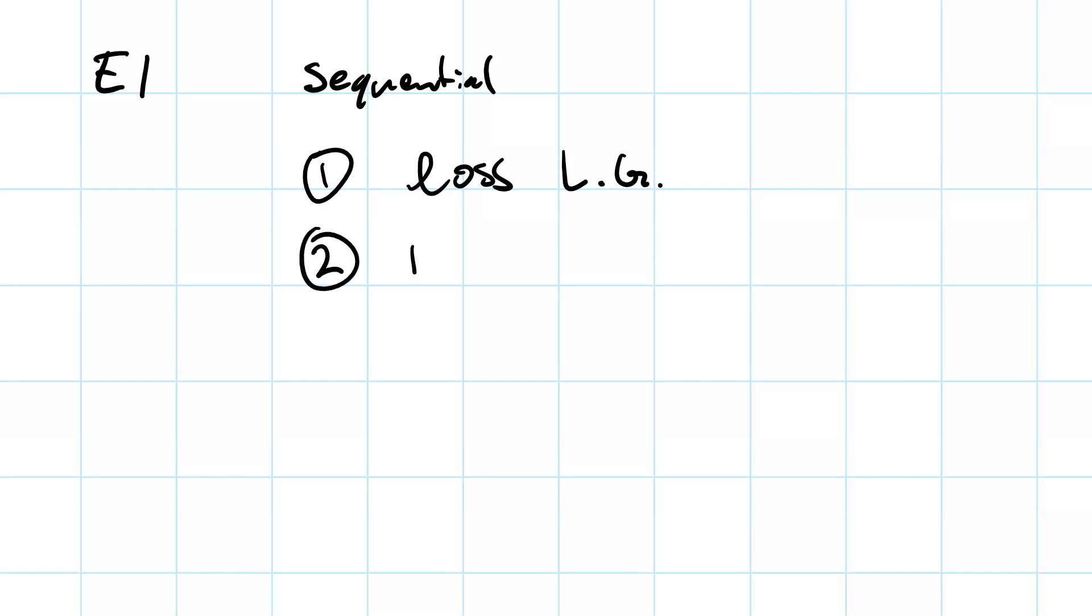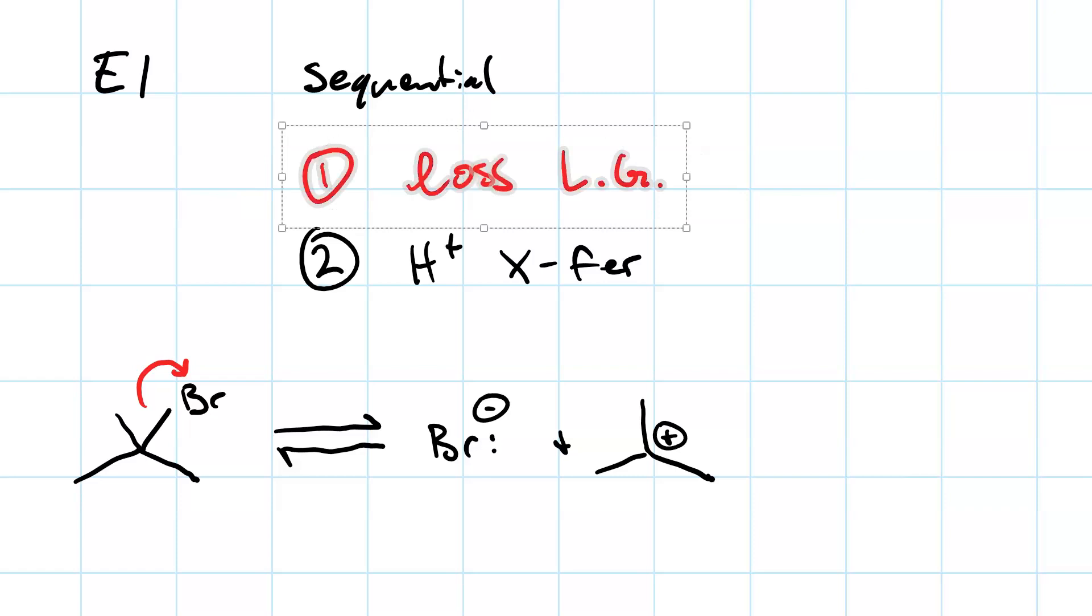Step two is proton transfer. If I have my 2-bromo-2-methylpropane, first step will be loss of a leaving group. We get our bromide ion and our carbocation. So far, this looks just like the first step of the SN1 mechanism. Because mechanistically it is the same. It's loss of a leaving group.